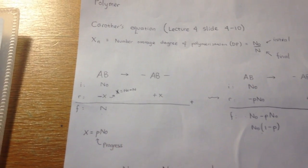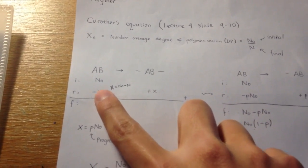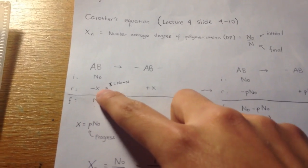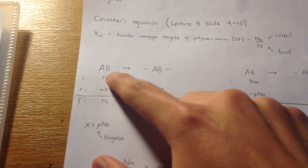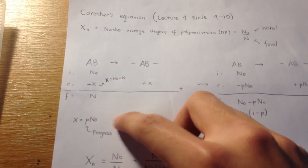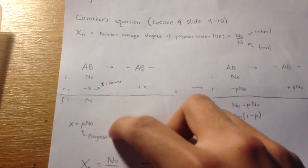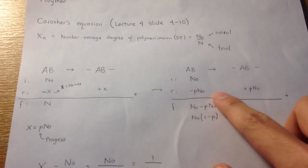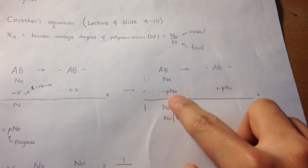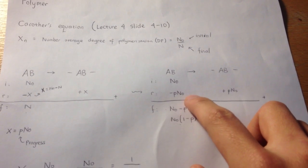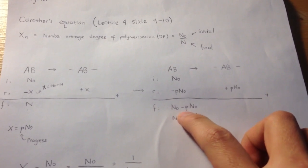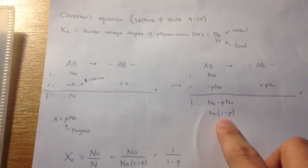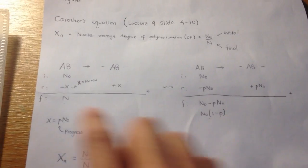And I could also express X as P times n0, where P is progress. So if the progress is 100%, that means X equals n0 and there won't be any monomers left. If P is 50%, that means the progress is 50%. Based on this we can rewrite it. Reaction is P n0, final is n0 minus P n0, or n0 over (1 minus P). And this equals n.